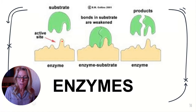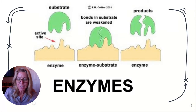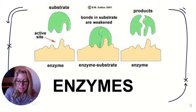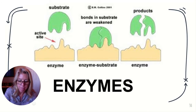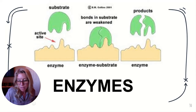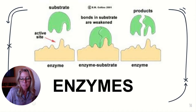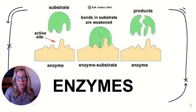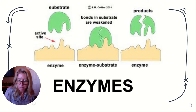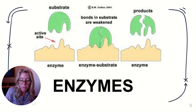We're at 6.3 in the notes — we've already done 6.1 and 6.2 in video one. Metabolic pathways are an orderly sequence of linked reactions, and each step is catalyzed by a specific enzyme. A catalyst is a substance that can increase the rate of a reaction without being altered — so it's not destroyed or used up by the process. An enzyme is an organic catalyst, usually a protein.